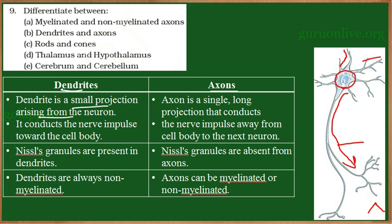In dendrites, Nissl granules are present, whereas these are absent in axons. Dendrites are always non-myelinated, meaning they are not covered by the myelin sheet. In contrast, axons can be either myelinated or non-myelinated. These are the differences between dendrites and axons.